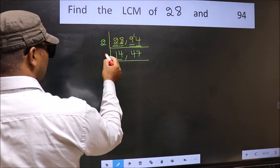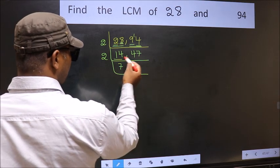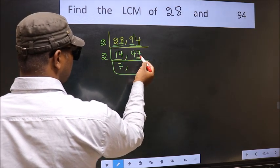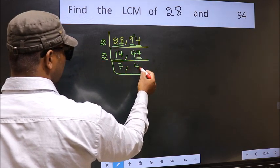Now here we have 14, 14 is 2 sevens are 14. The other number 47, last digit 7, not even. So this is not divisible by 2. We write it down as it is.